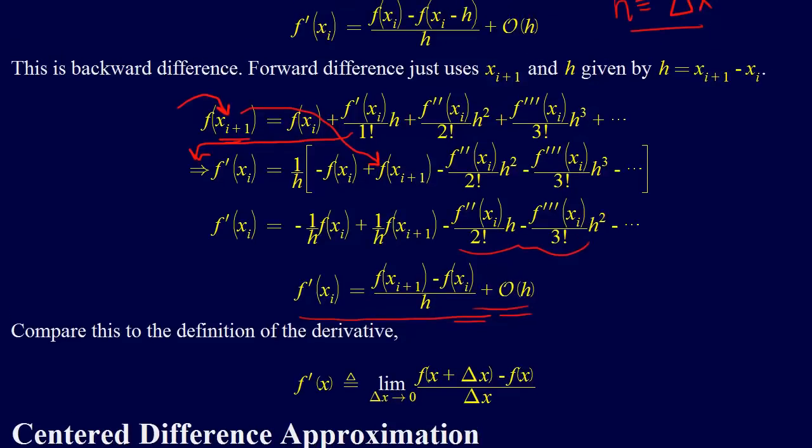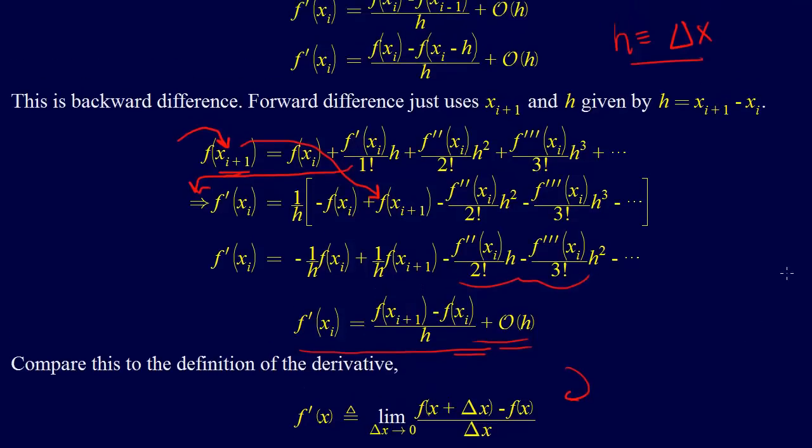We can compare those to our definition of the derivative that we had before. We see that it's just exactly the same thing. F prime of x i is the limit as delta x goes to 0. We don't have this limit term here, but this term here is exactly the same as this term here.